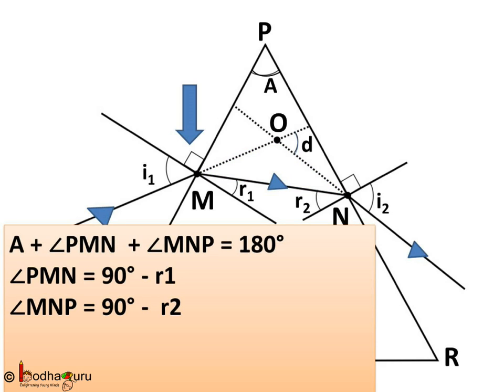Now if we look at triangle PMN, then here angle A plus angle PMN plus angle MNP is equal to 180 degrees. This is because the sum of interior angles of a triangle is equal to 180 degrees.